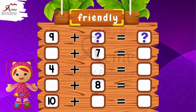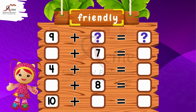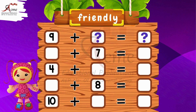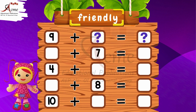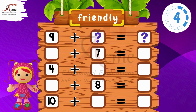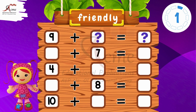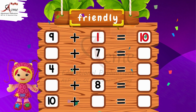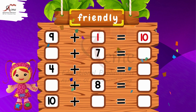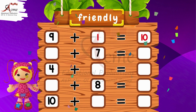Friendly numbers. First, let's find the missing numbers to make the sums friendly. What number do we need to add to 9 to make it a friendly number? That's right — 9 plus 1 equals 10. Great job.